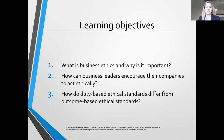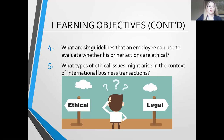Our objective of chapter three is to determine what business ethics is and why it's important. How can business leaders encourage their companies to act ethically? How do duty-based ethical standards differ from outcome-based ethical standards? We'll look at the six guidelines that an employee can use to evaluate whether his or her actions are ethical, and what types of ethical issues might arise in international business. Sometimes something may be legal, but it may not be ethical — ethical reasoning might lead you in a different direction.